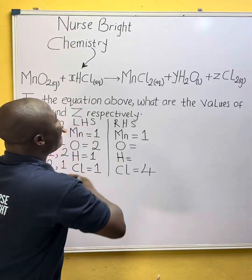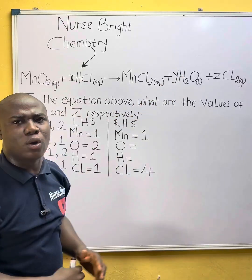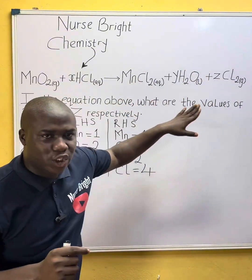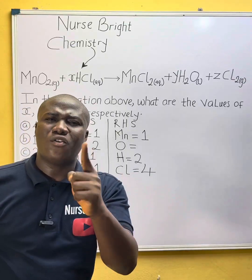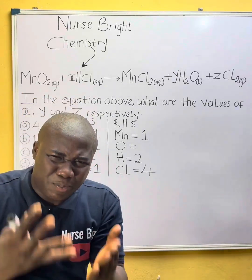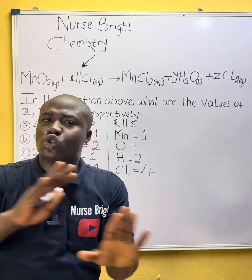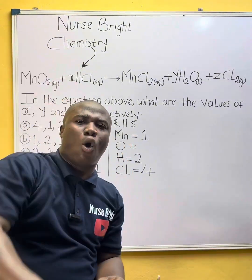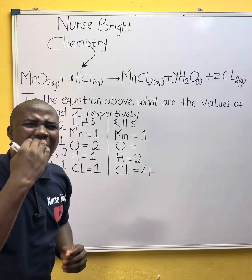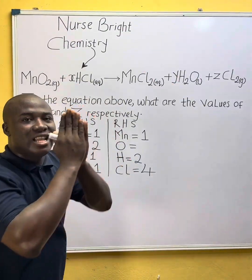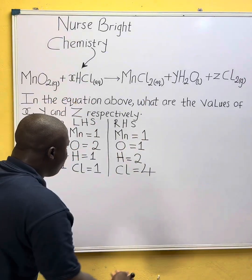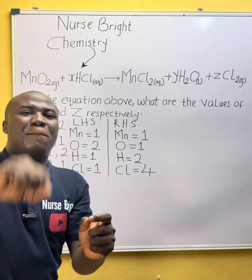How many hydrogen atoms can you see on the right-hand side? It's just two atoms of hydrogen. Hydrogen does not appear anywhere else on this side of the reaction. Moving to oxygen on the right-hand side: before balancing, I can see just one oxygen atom. Now we have filled in the numbers of all elements as given by the question, so the question now wants us to balance the reaction.